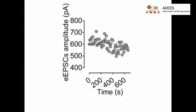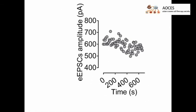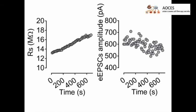Here, the evoked EPSCs amplitude is assessed in the voltage clamp mode at minus 80 millivolts. When series resistance increases, the amplitude of evoked EPSCs decreases.